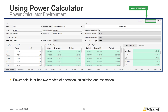The other Power Calculator mode is called Estimation. Power Calculator will be in Estimation mode if it is opened before a design has completed place and route. This is because the tool can only estimate the power consumption of a design, since it will have no information on how the design was implemented on a device.